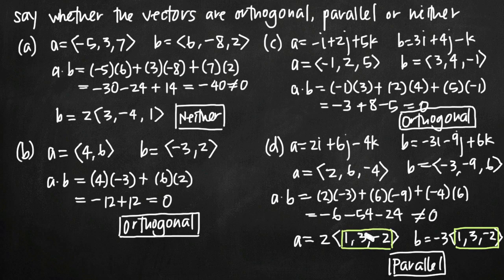If you can get the two vector components to equal one another after factoring, then you know that your vectors are parallel. That's how you determine whether your vectors are orthogonal, parallel, or neither.